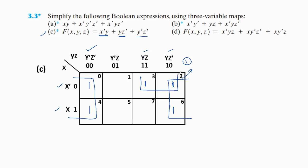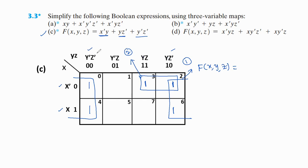Now we write the simplified expression f(x,y,z). For the first group of four ones: they exist in both rows and the first and last columns, so x is eliminated; y appears in both y' and y forms so y is also eliminated; z' is common — giving z'. For the second group of two ones: it exists only in the first row and two middle columns, so this is x'; y is common, z is eliminated — giving x'y. So the simplified expression for the third expression is z' + x'y.